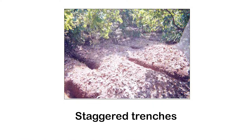In staggered trench, the size of trenches is 5m length, 1m width and 0.5m depth, and it has to be taken between two rows of cashew or in the middle of four plants across the slope.